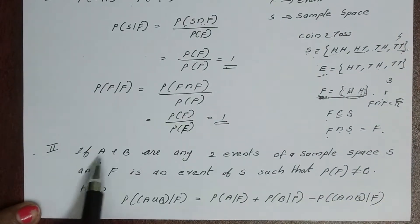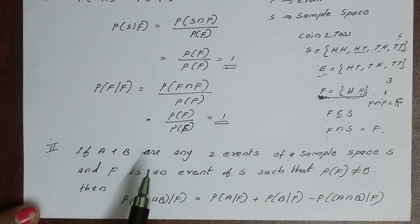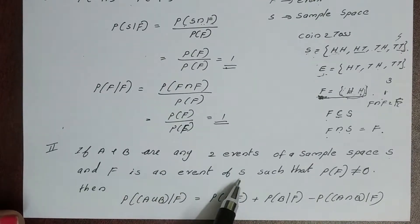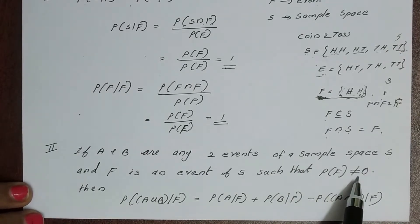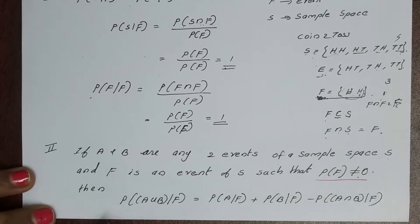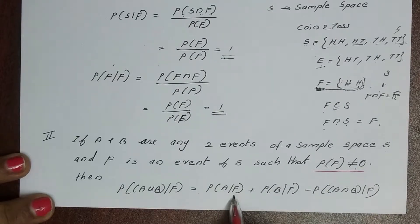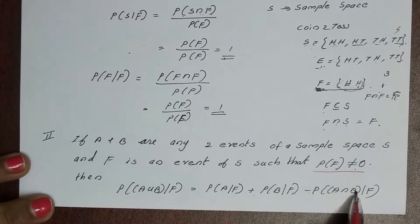Second property: if A and B are any two events of a sample space S, and F is an event of S such that probability of F is not equal to 0, then probability of A union B given F is equal to probability of A given F plus probability of B given F minus probability of A intersection B given F.